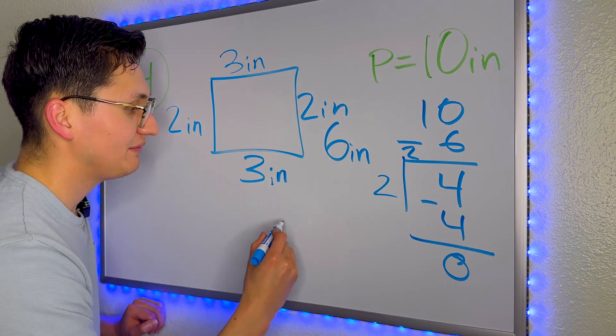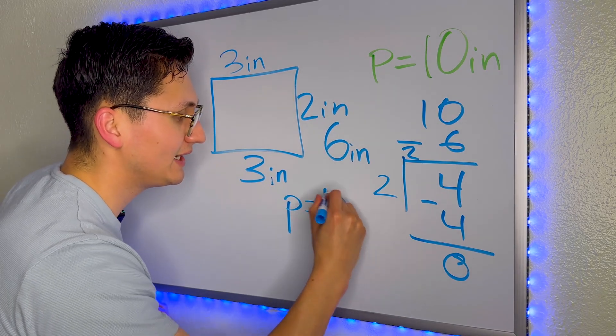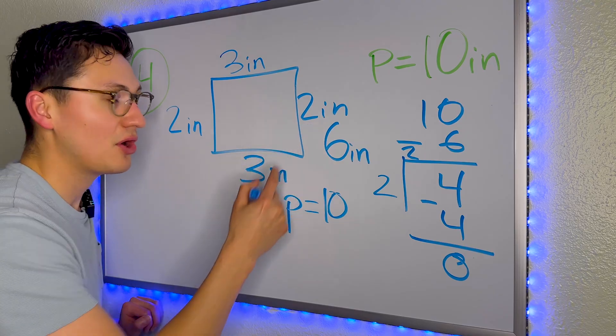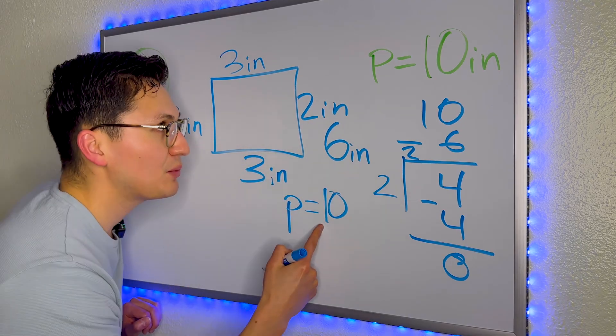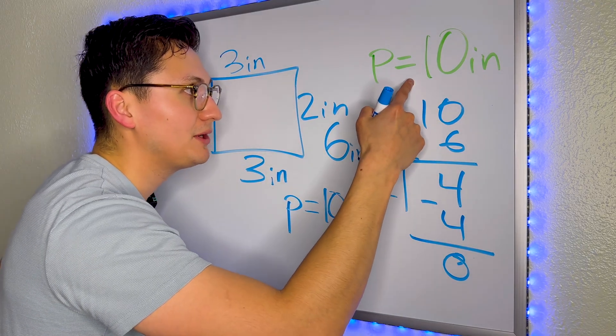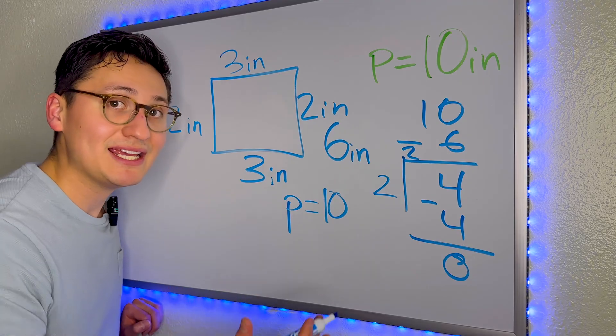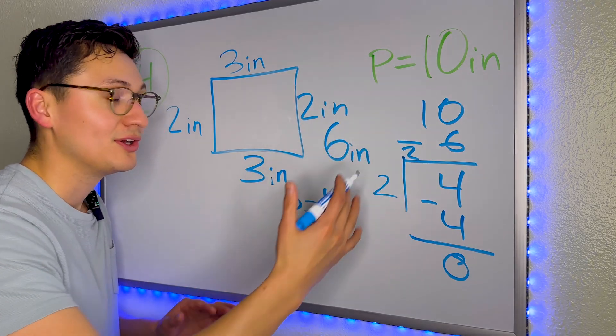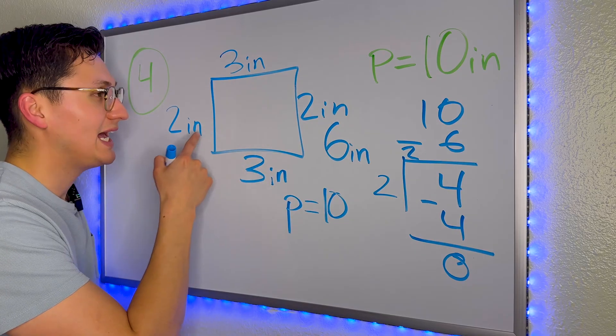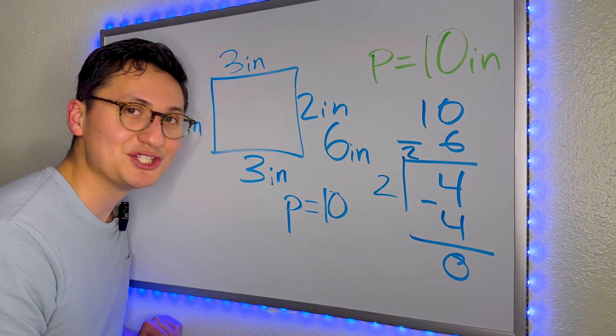So the perimeter of this shape is 10 if the sides are 2 inches. And when we compare that to the perimeter that they told us it really is, they're equal. So the length of these two sides are 2 inches.